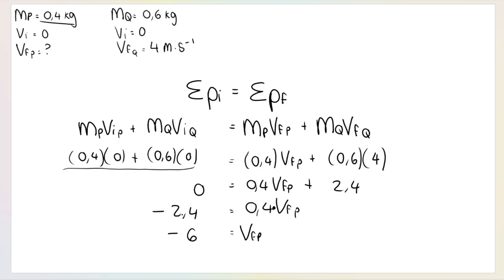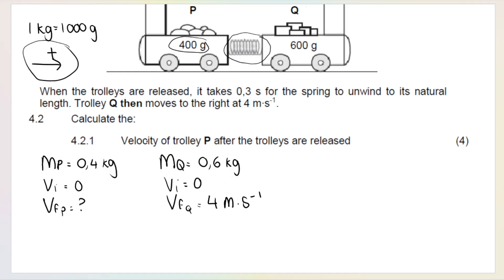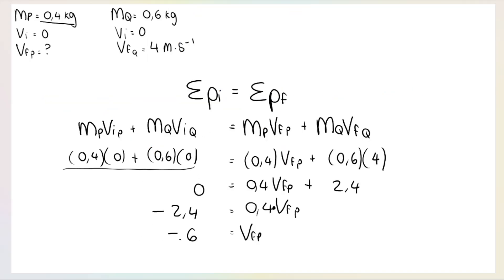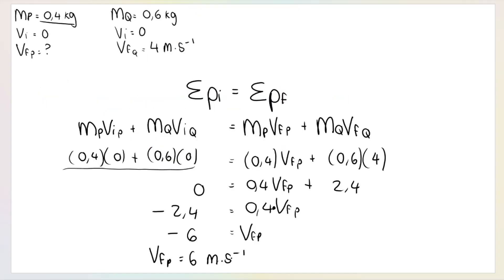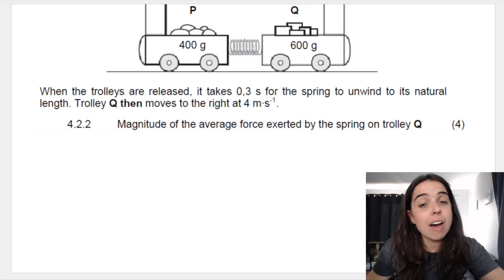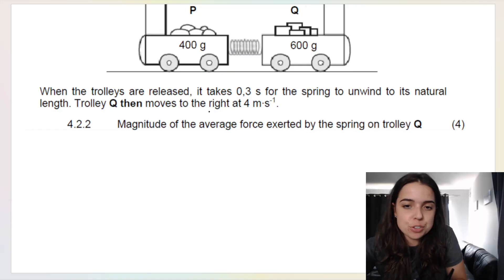You never ever leave a vector's answer as a negative. Velocity is a vector — look at what they asked: 'calculate the velocity of trolley P.' You never leave a velocity as a negative. So we rewrite: the final velocity of P is 6 m/s — as a positive — and you must give a direction. Since we chose to the right as positive, this velocity is to the left.